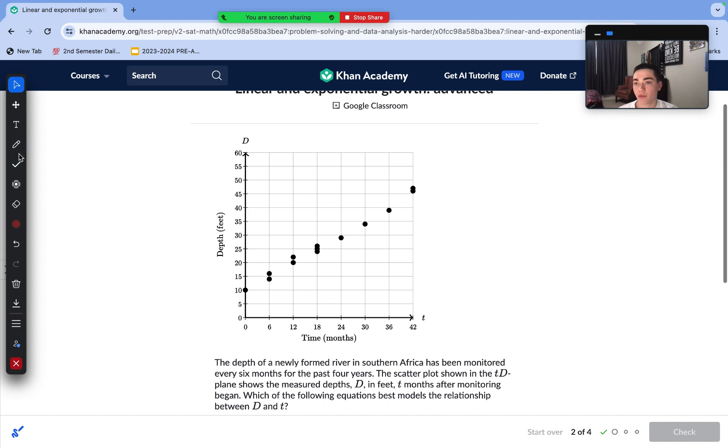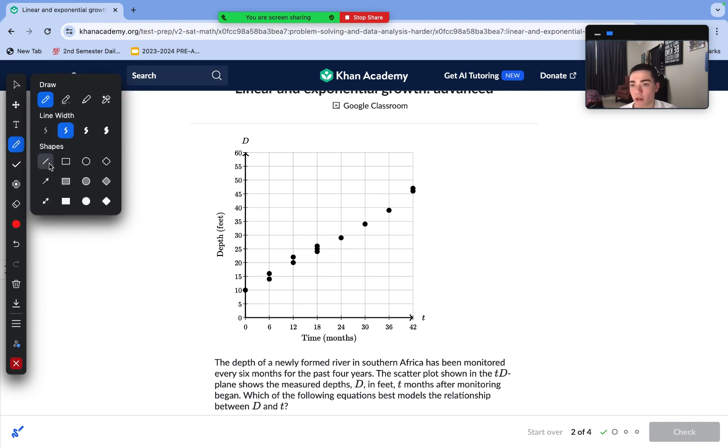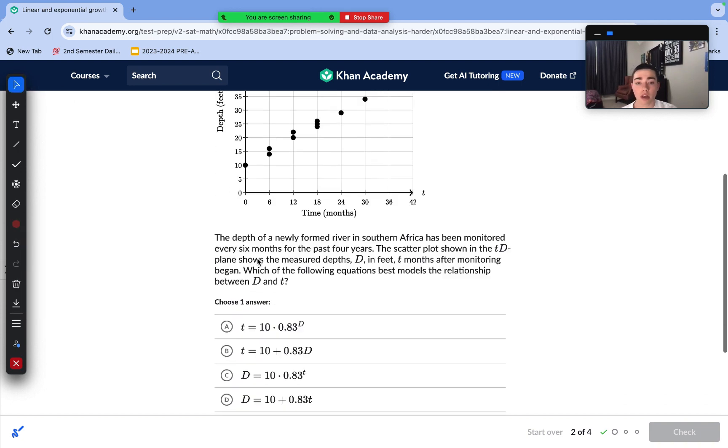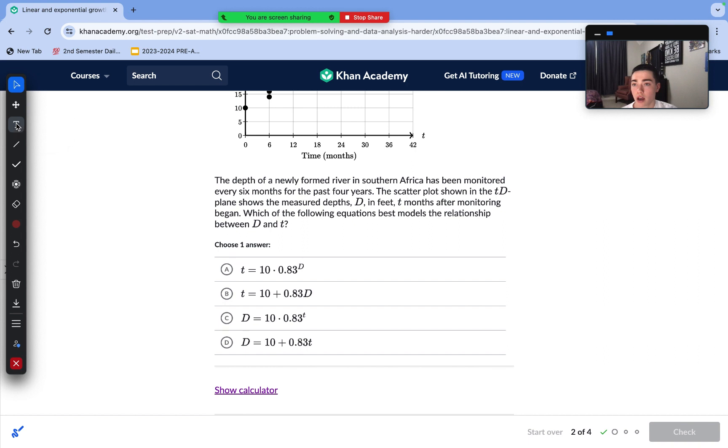So first we need to just take a look at this. Does this relationship model an exponential function better, or does it model a linear function better? It looks to conform pretty well to a straight line, but the confirming factor that we can use is if we graphed both of our relationships C and D into Desmos, or the graph calculator that we have provided with our digital SAT.